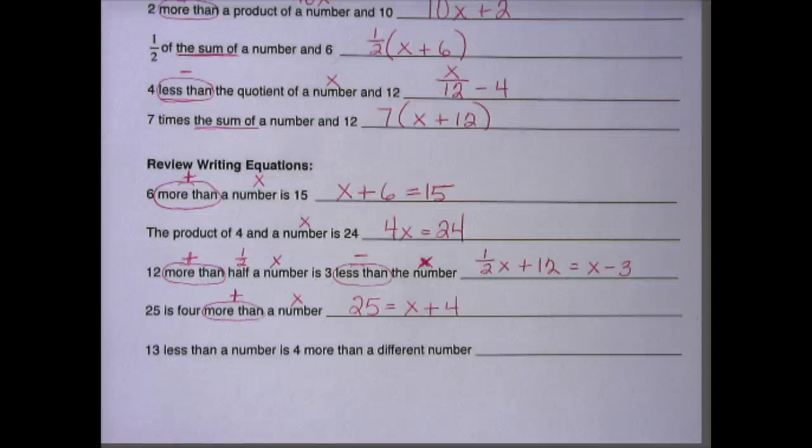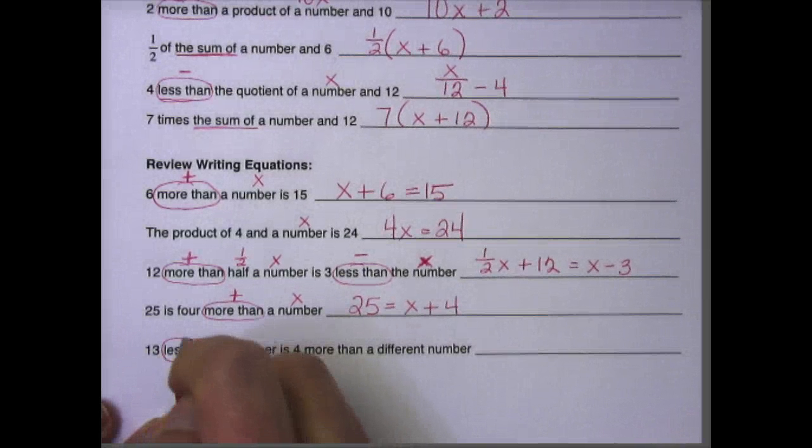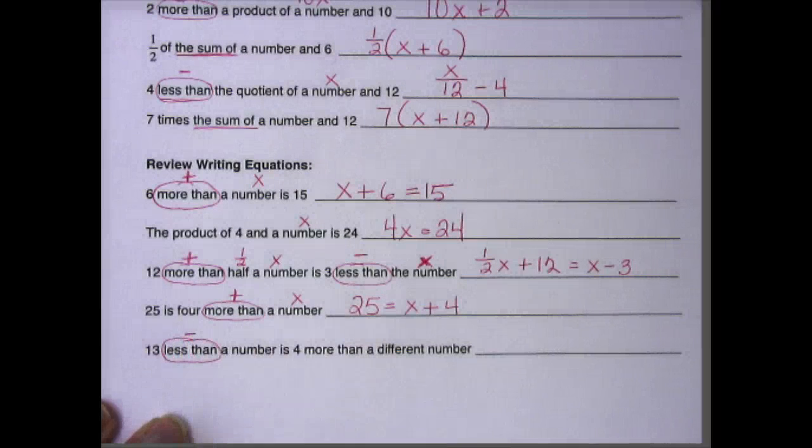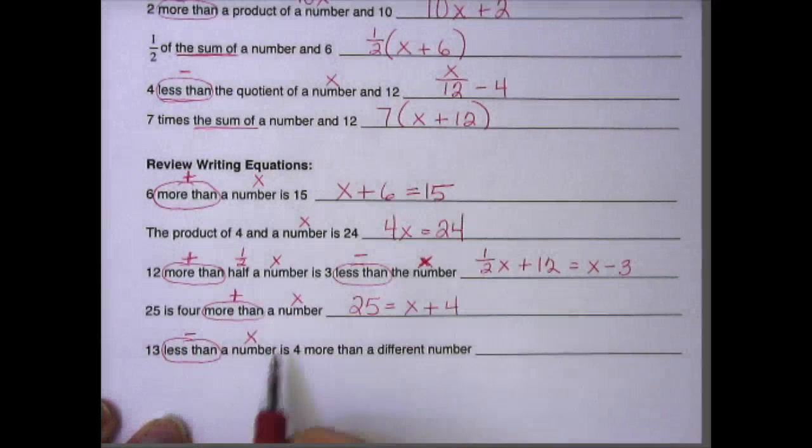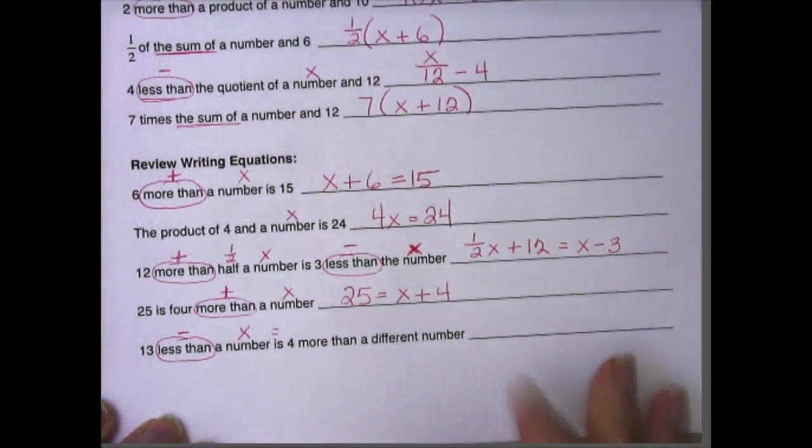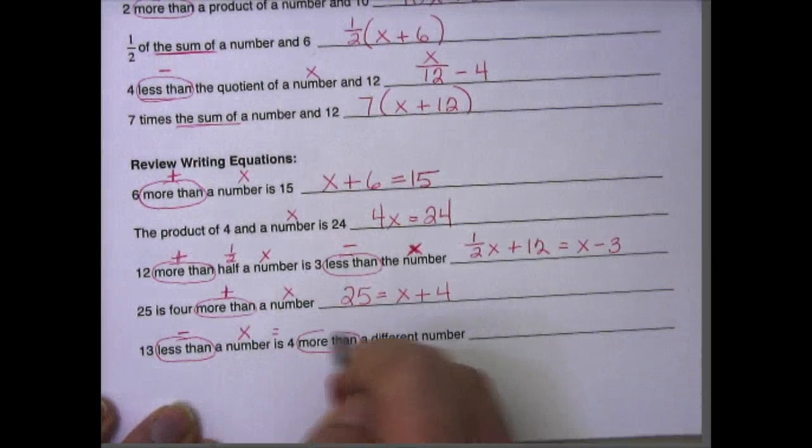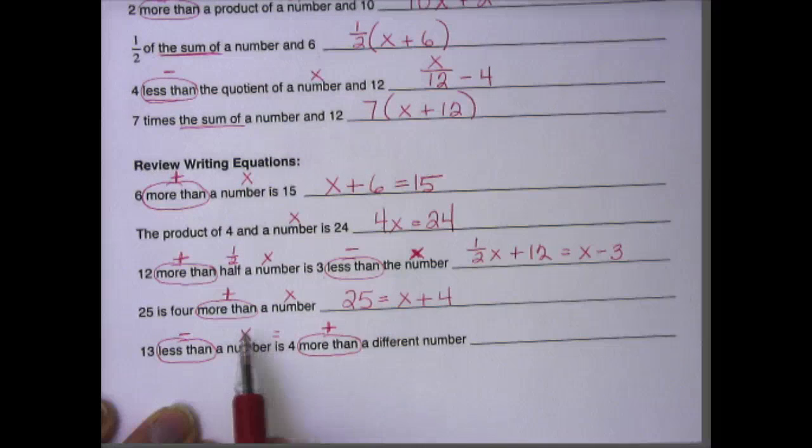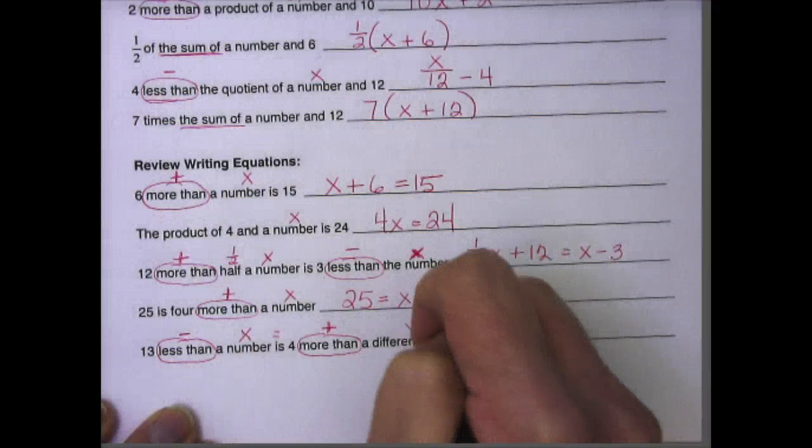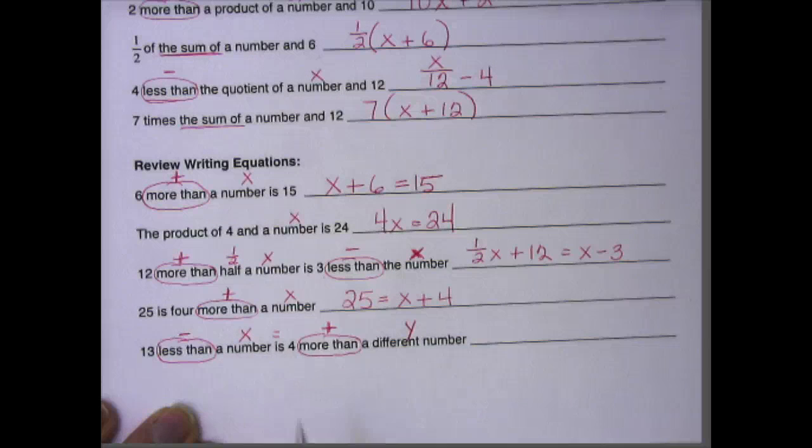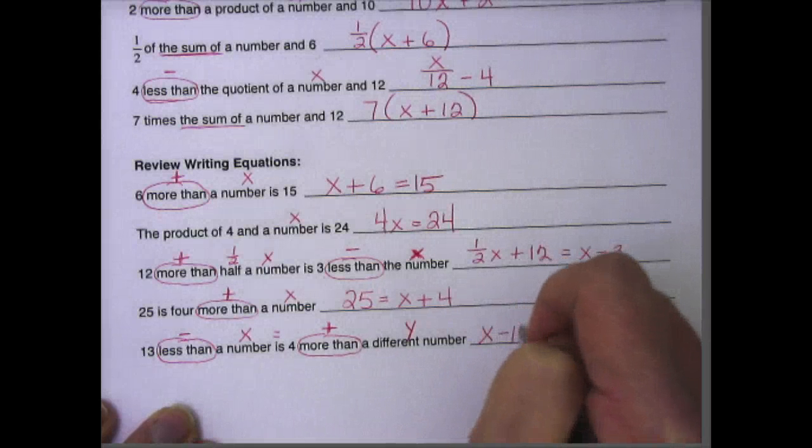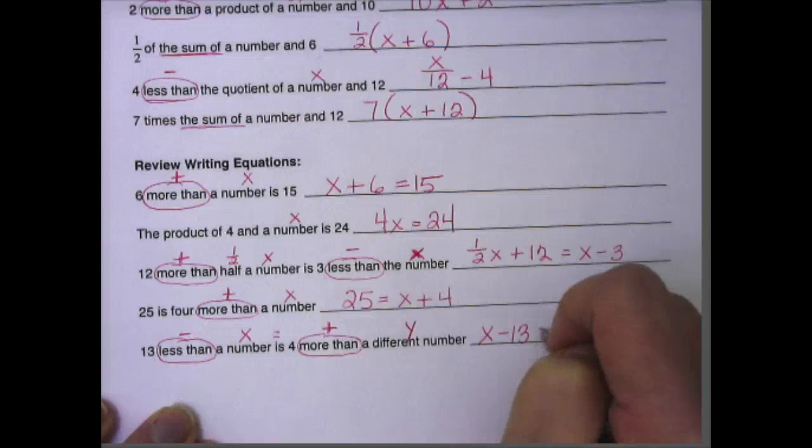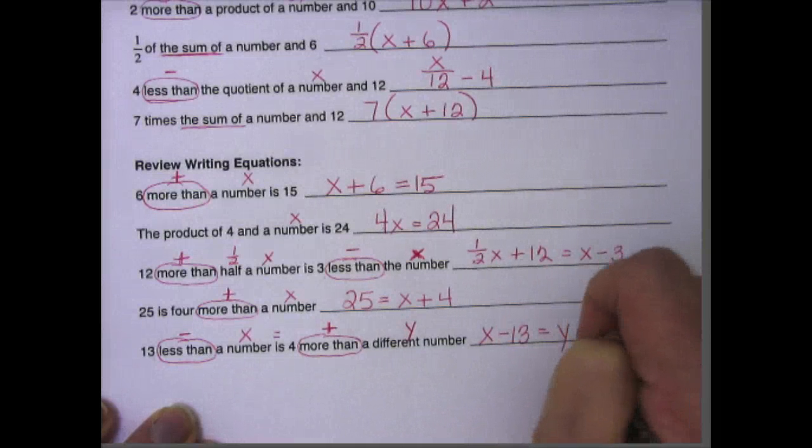And the last one, 13 less than a number is 4 more than a different number. Just think about it from left to right. So less than means subtract, but it also means turnaround. So I'm going to circle it. A number, x, we know is means equals, 4, more than, some more turnaround words, but this time they mean add, a different number. So this time we have a number x, and this time it means a different number, so we'll call it y. So we have x - 13 equals y + 4.